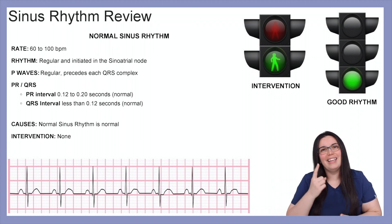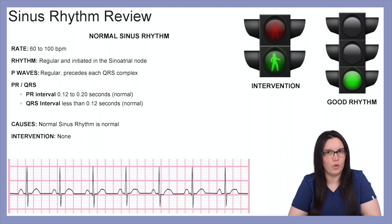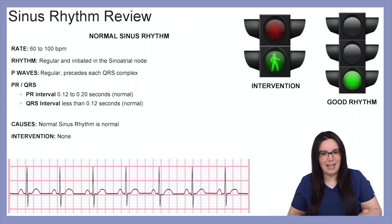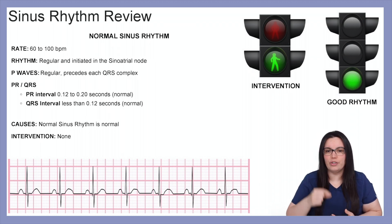To begin, let's look at our first rhythm. We have our sinus rhythm, our normal sinus rhythm. The rate is 60 to 100 beats per minute. The rhythm is regular and it is initiated by that sinoatrial node.